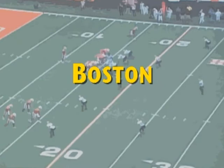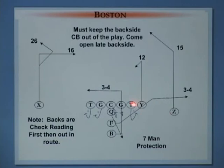The first play-action concept we refer to as Boston. We like to run this pass versus quarters to the tight end or two-receiver side. Split is very important — no more than a 10 to 12 yard split; closer is okay, we just don't want to get too wide. The theory is to alert the near safety and then bring it right back down, reading it high to low.